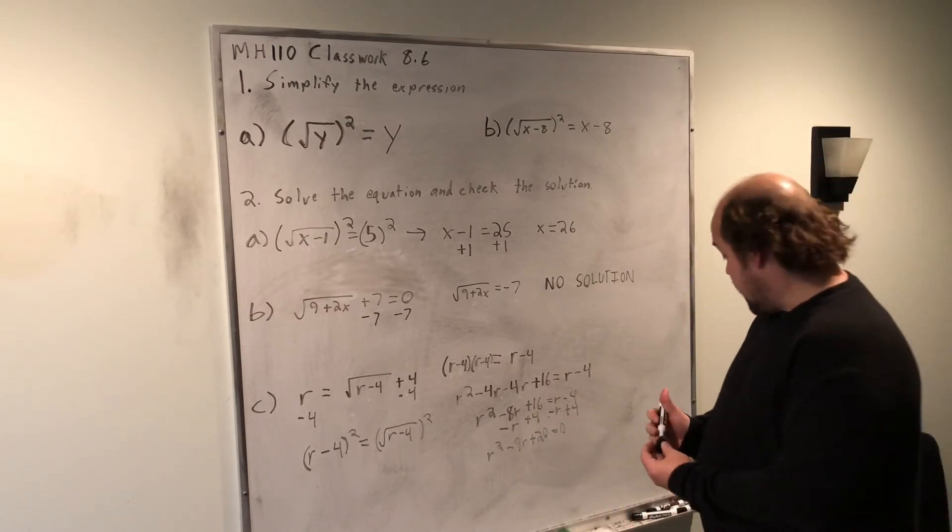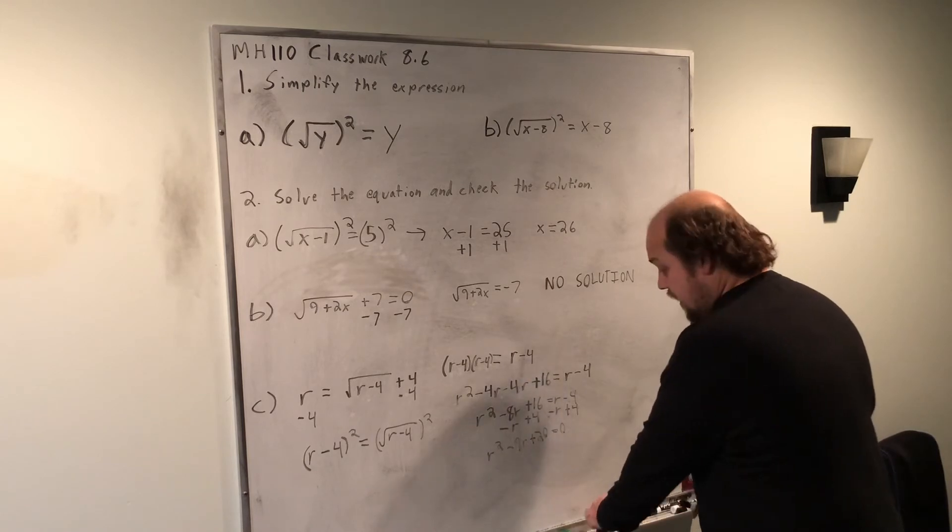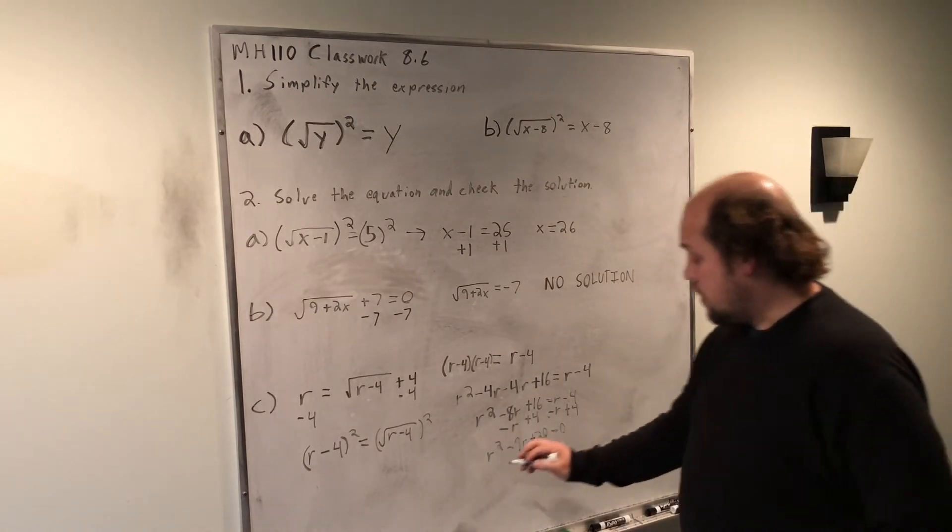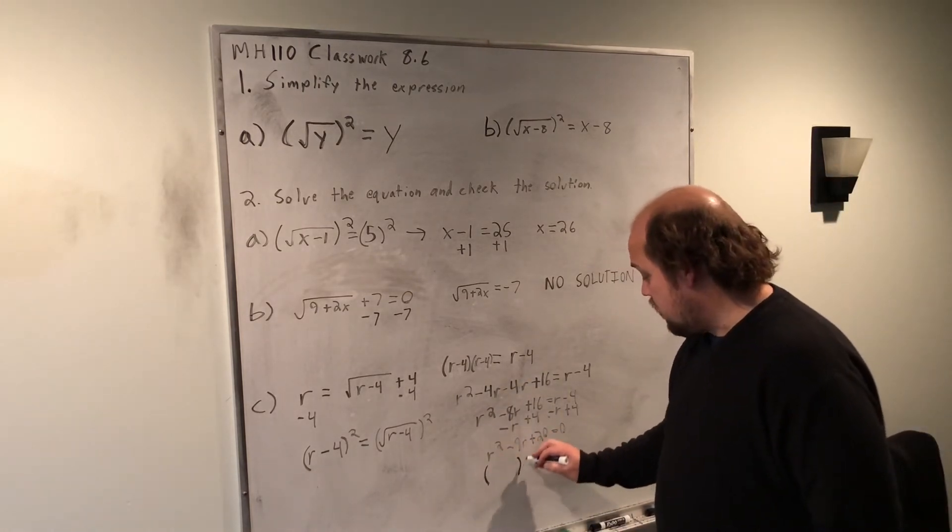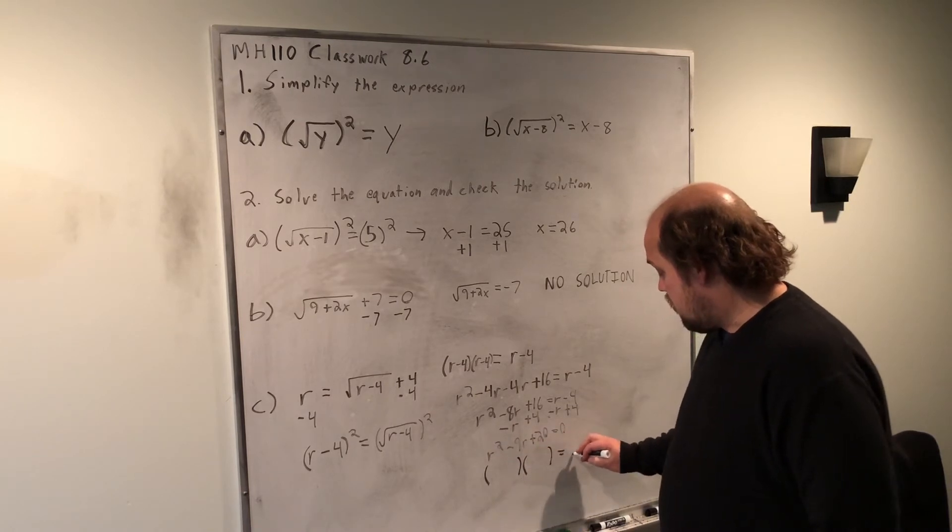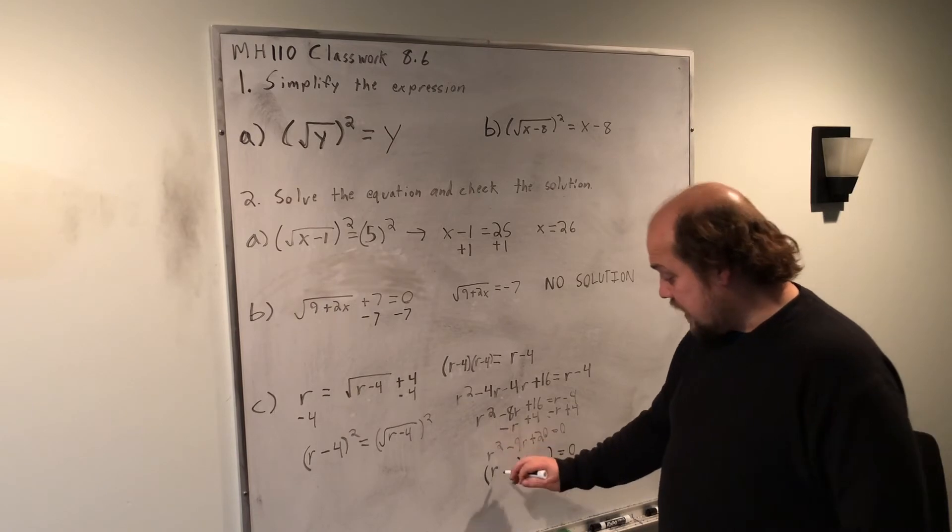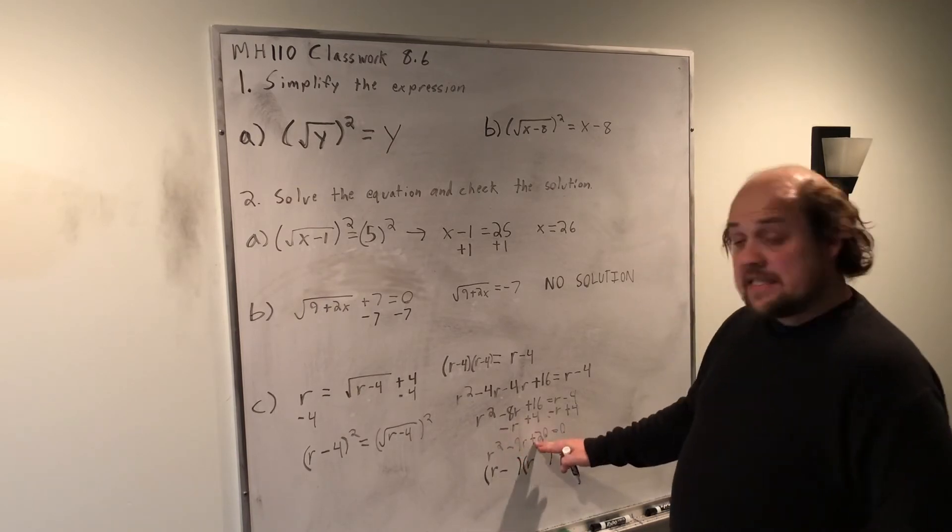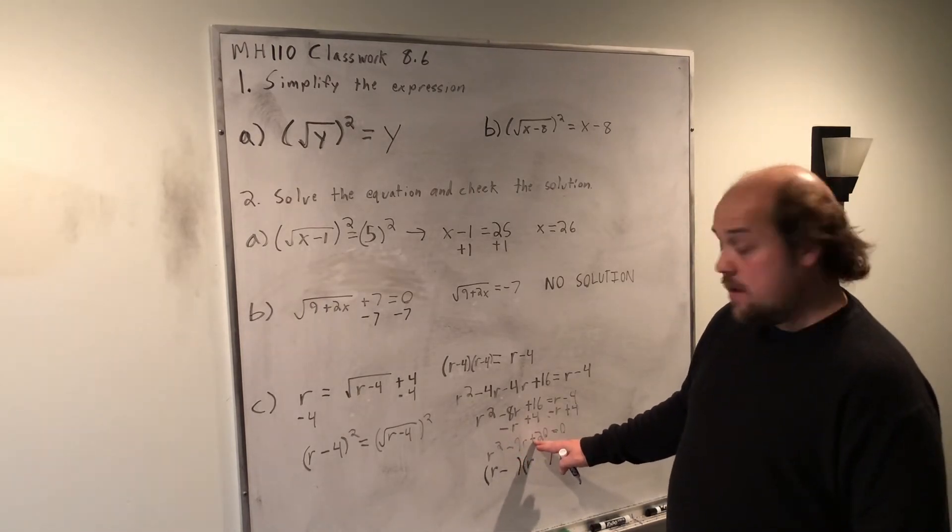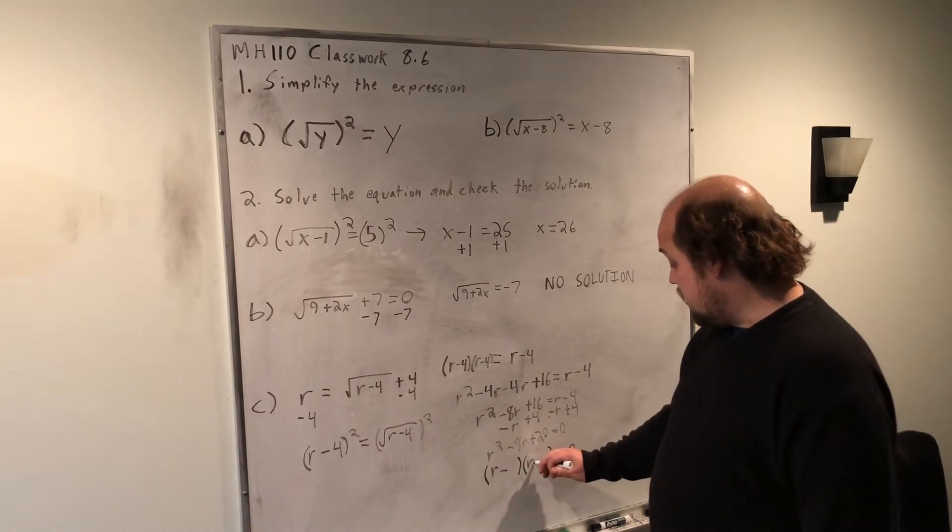When I go to factor r squared minus 9r plus 20, I put my two parentheses in. Second, r and r, first sign is negative, second sign is a positive, which tells me same. Same as a negative is another negative.